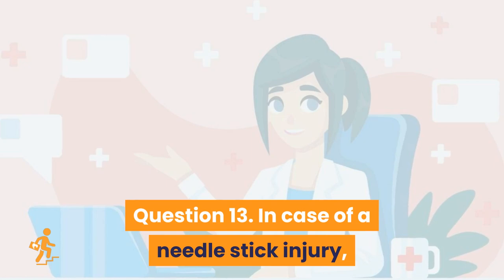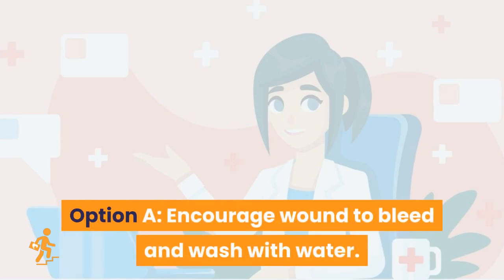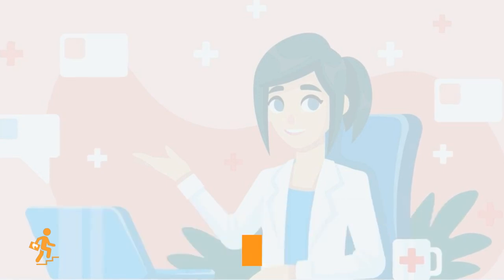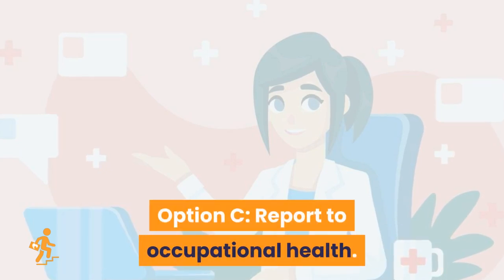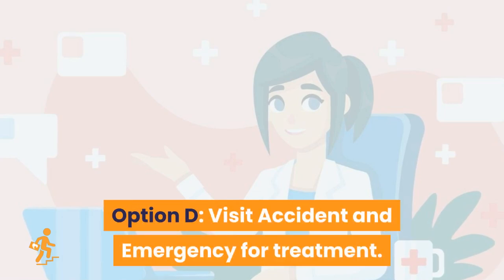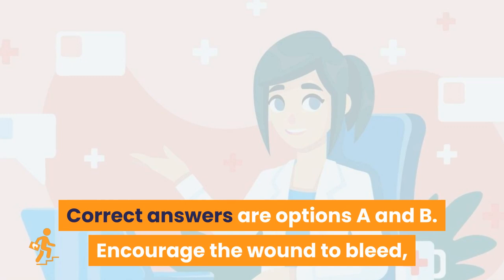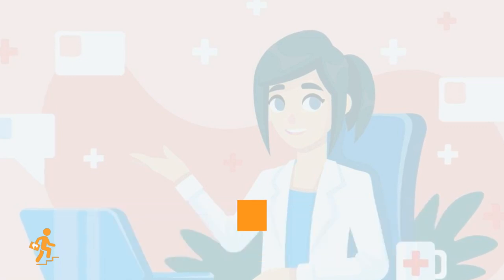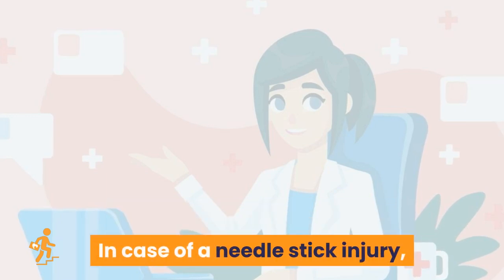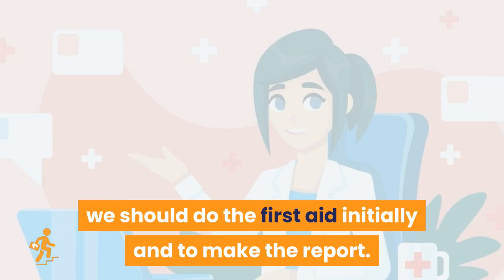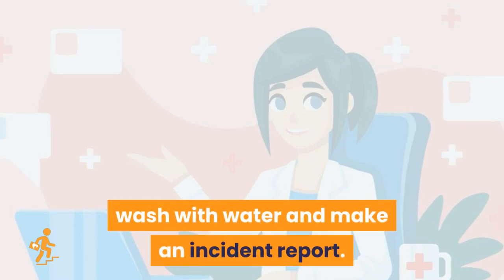Question 13. In case of a needle stick injury, what should the nurse do initially? Option A: Encourage wound to bleed and wash with water. Option B: Make an incident report. Option C: Report to occupational health. Option D: Visit accident and emergency for treatment. Correct answers are Options A and B: Encourage the wound to bleed, wash with water, and make an incident report. In case of a needle stick injury, we should do first aid initially and make the report.